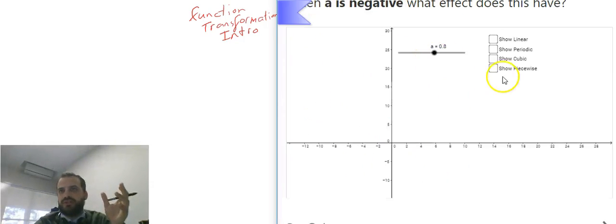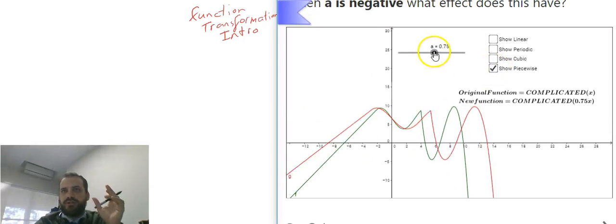And then there's a fourth function transformation. Let's look at this one. Here's our original function. Whoops. Let's get this back to our original. Here's our original function, or close to it.